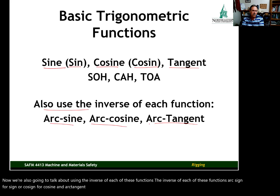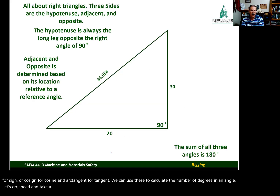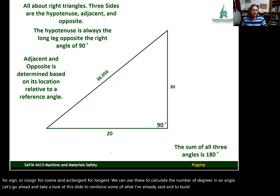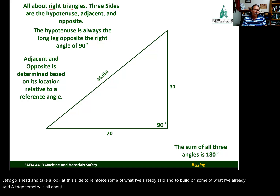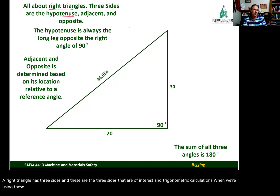We can use these inverse functions to calculate the number of degrees in an angle. Now, trigonometry is all about right triangles. A right triangle has three sides that are of interest in trigonometric calculations when we're using these functions. The three sides are the hypotenuse, the adjacent, and the opposite.